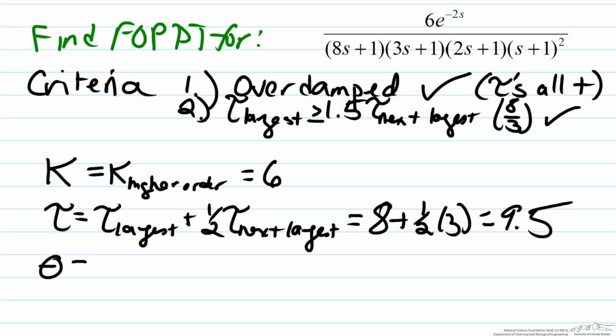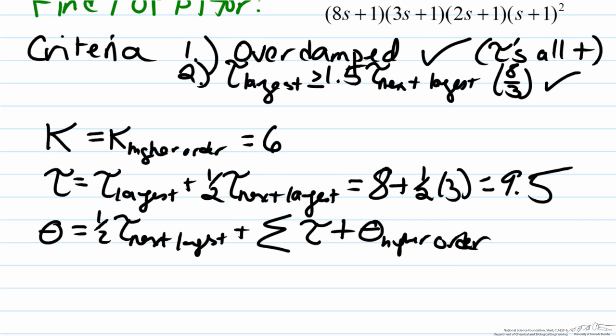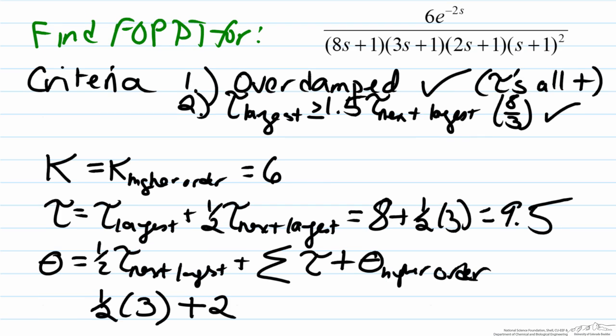Finally, theta will represent half of the next largest tau, plus the sum of all other tau's, plus any dead time that was present in the initial process. So here we'll take half of three, because that's the half of the next largest tau. All of the remaining tau's we have, if we go back to our equation, we have nothing in the numerator, so therefore this will just be two, and we have s plus one squared, so we have two ones there, two plus one plus one, plus the value of the dead time which is already there, which is two. When we add these all together, we get seven and a half.